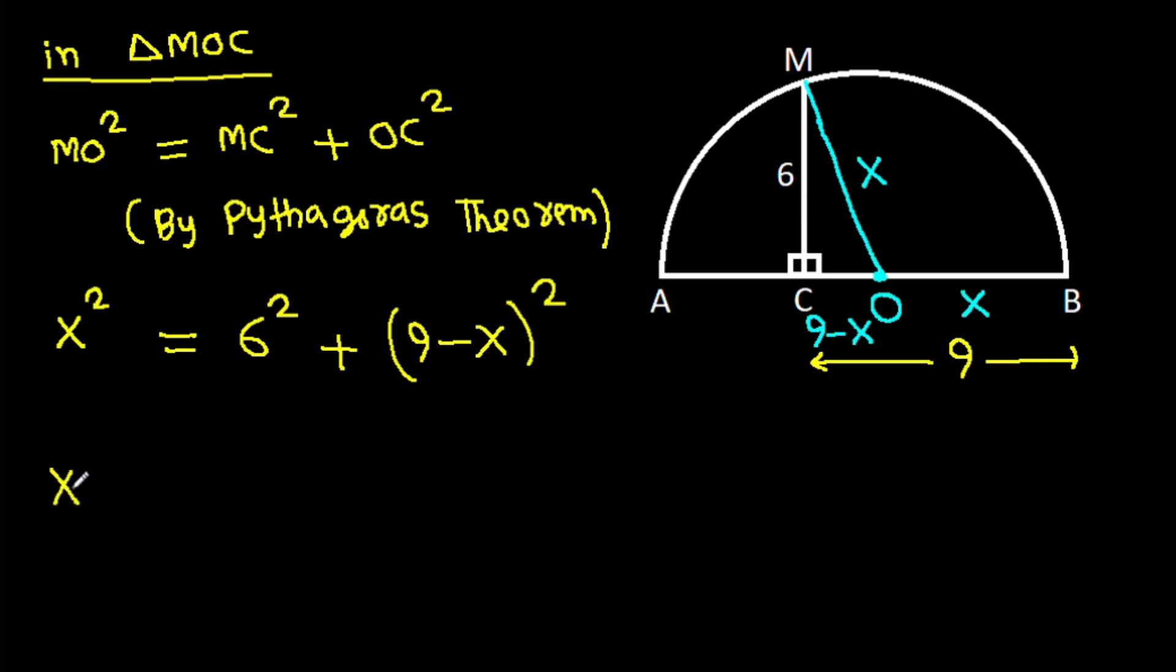And X squared is 36 minus, and this will be 81 minus X squared minus 18X. And X squared will get cancelled. So 0 is 117 minus 18X.